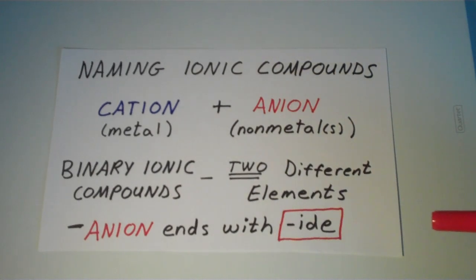So for binary ionic compounds, those are the ones in which we have only two different elements, so a metal and a nonmetal. In a binary ionic compound, the anion, or the nonmetal, ends with the suffix IDE. So bromide, chloride, oxide, etc.